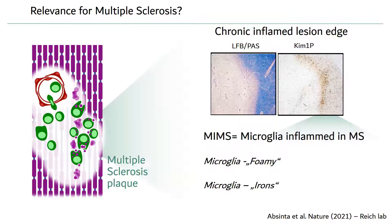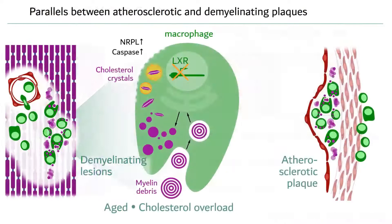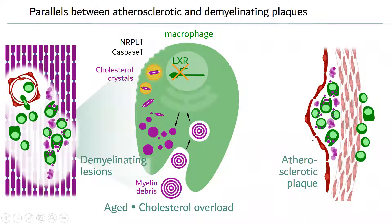An important parallel can be drawn between demyelinating lesions and atherosclerotic plaques. In atherosclerosis, oxidized LDL cholesterol is taken up by macrophages within the arterial wall, leading to accumulation of foam cells, chronic inflammation, and the diseases associated with arteriosclerosis.